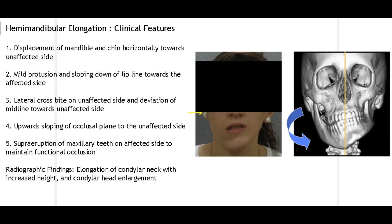The occlusal plane slopes upward towards the unaffected side. Since the mandible is moving in that direction, there is a gap in occlusion between the maxillary and mandibular teeth on the affected side. To maintain occlusion, the maxillary teeth supraerupt on the affected side, while on the unaffected side a crossbite is forming. Radiographically, the condylar neck height is increasing and the head of the condyle is also enlarging. These are the clinical features of Type 1, hemimandibular elongation.